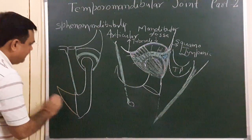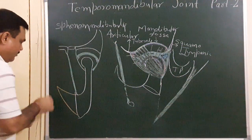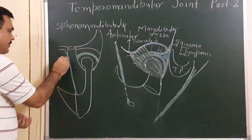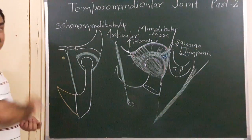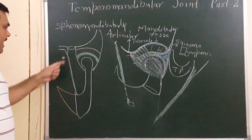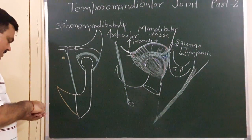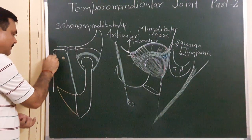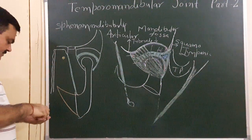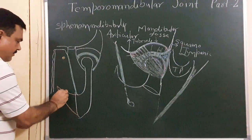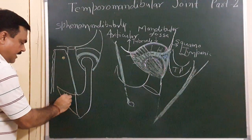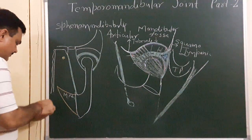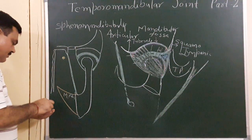Here is the position of the medial pterygoid muscle. Here is a nerve — this is the chorda tympani. Here is the position of the pharynx. And this is the medial pterygoid muscle.